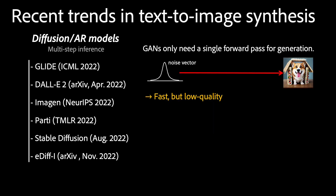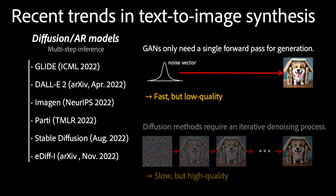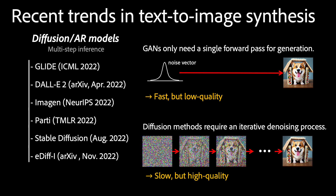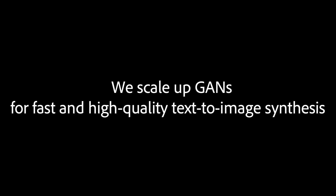In summary, although GANs enjoyed the advantages of fast inference, they often fell short in terms of image quality. In contrast, while diffusion models involve a more time-consuming iterative denoising process, they tend to produce high-quality image samples. In our work, we hypothesized that the lower image quality of GANs is due to their limited model capacity compared to diffusion models. Therefore, our aim is to scale up GANs for fast and high-quality text-image synthesis.